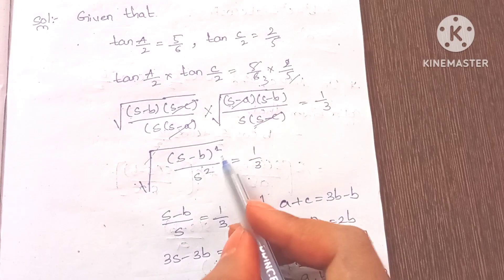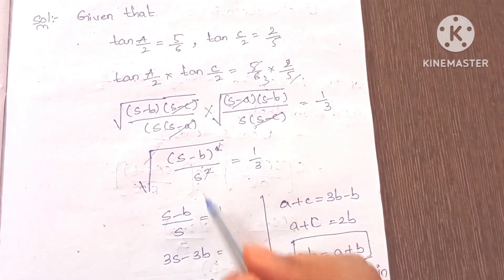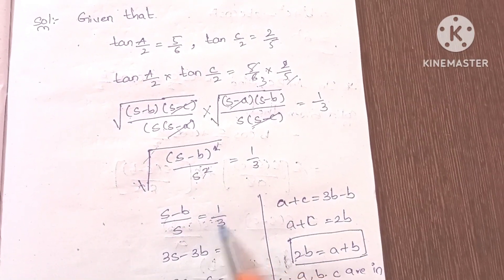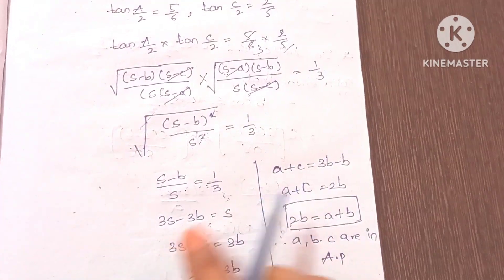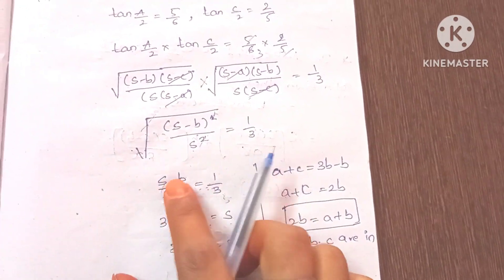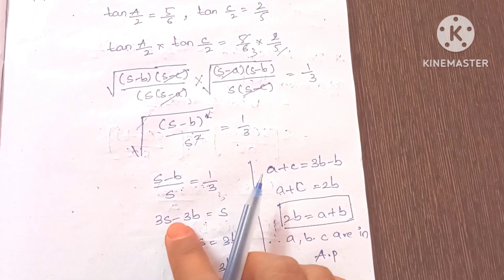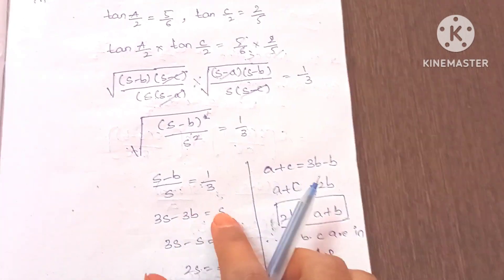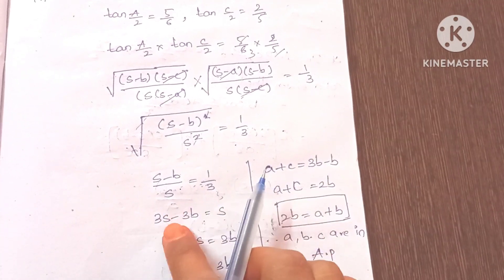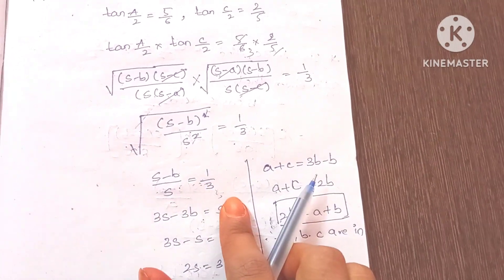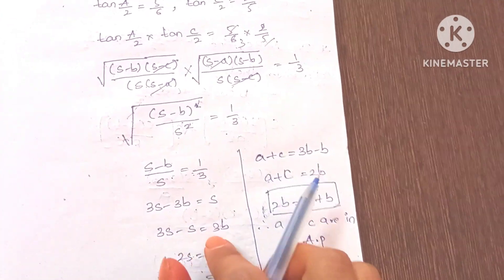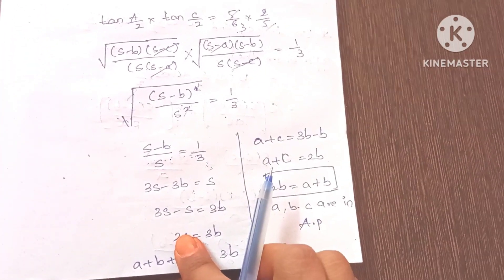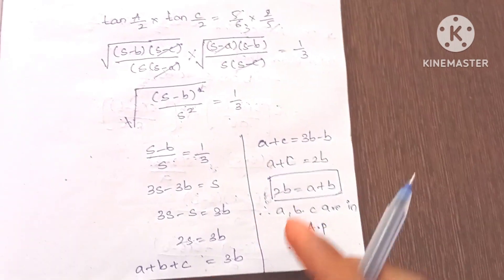Square root cancels. So we get s-b by s is equal to 1/3. Therefore 3(s-b) = s, which gives 3s - 3b = s, so 3s - s = 3b, giving us 2s = 3b. And 2s equals a plus b plus c.